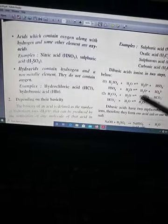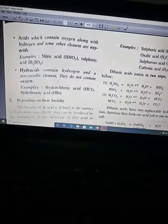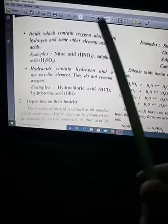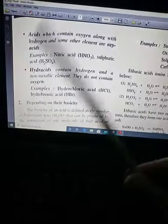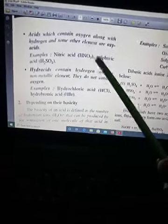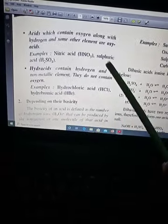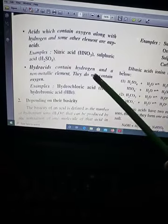Now today we are going to see what are oxy acids and hydro acids. Oxy acids are acids which contain oxygen along with hydrogen and some other elements. Examples are nitric acid and sulfuric acid.